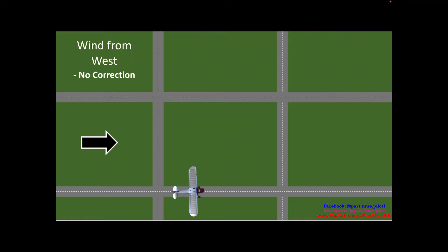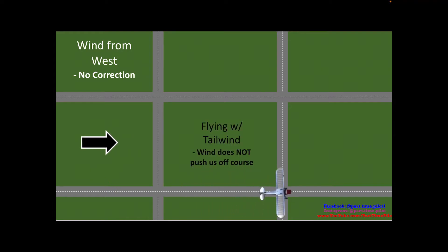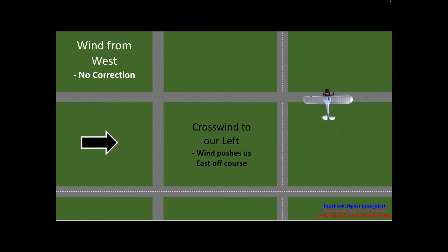We make another 90-degree turn and now we have a direct tailwind. Again, because it's a direct tailwind the wind is not pushing us left or right, but it will increase our ground speed. Then when we make the next 90-degree turn, the crosswind is now from our left and it's going to push us off course again to the east. So now we're even further east of our rectangular pattern and in danger of running into other patterns. That's an example of flying with wind when we make no corrections and aren't cognizant of the wind.